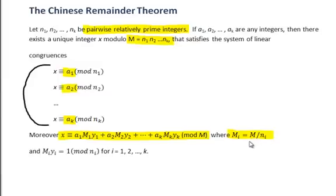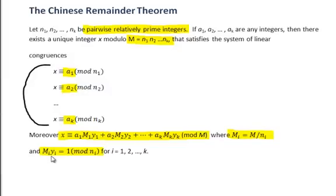For example, if we wanted to find m3, we would take m, the product of all the mods, and divide by n3, the third mod. Lastly, we need to find the values of y_i. The m_i's and y_i's satisfy the congruences m_i times y_i congruent to 1 mod n_i, for i going from 1 to k. So we have a series of congruences that we need to solve.